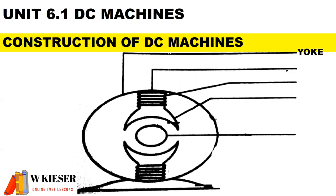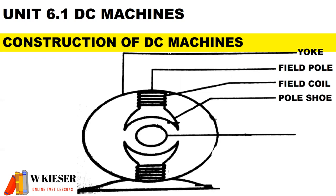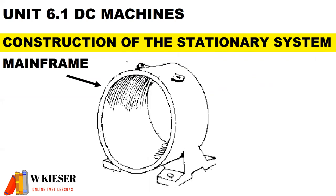The first main parts are: the yoke, the field pole, the field coil (also known as the field windings), the pole shoe, and the armature assembly. Let's take a look at these in more detail.